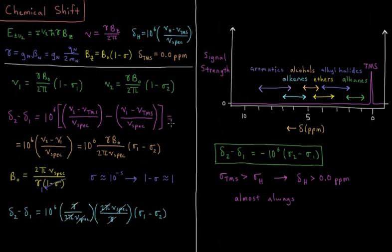So that's going to equal, well, the nuTMS is going to cancel being subtracted in both cases. So we have 10 to the sixth times nu2 minus nu1 over the frequency of the spectrometer, which equals, once we substitute in these values, they both have the constants of gamma B0 over 2pi. So we have 10 to the sixth gamma B0 over 2pi times nuSpec times sigma1 minus sigma2.